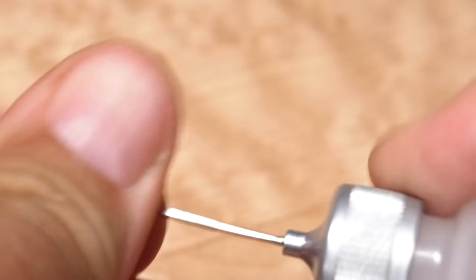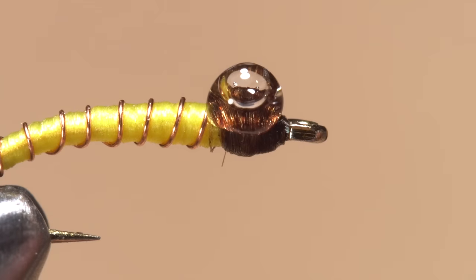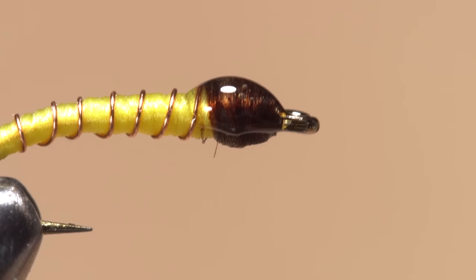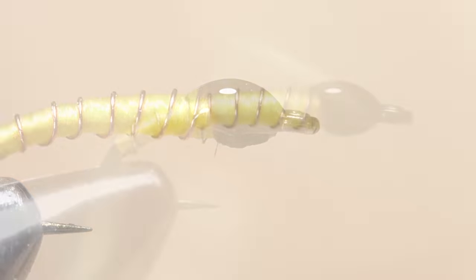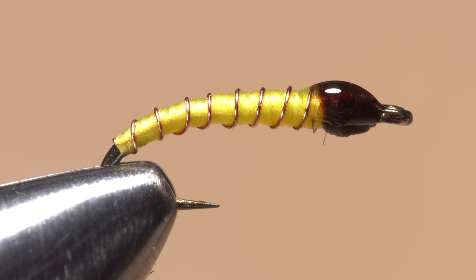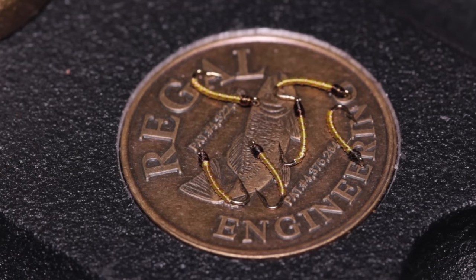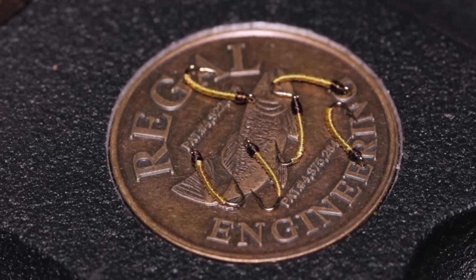A drop of head cement—here, Sally Hansen Hard as Nails—applied just to the head of the fly will ensure nothing comes unraveled and help to improve the overall look of the pattern. I've found no need to coat the entire body of the fly. The good news is this simple midge larva pattern is easy and quick to tie, even though it's super small.